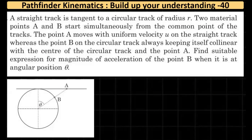Let's see this question of kinematics from Pathfinder — it's a 'Build Up Your Understanding' question number 14. The question states: a straight track is tangent to a circular track of radius r. Two material points A and B start simultaneously from the common point of the tracks. Point A moves with a uniform velocity u on the straight track, whereas point B on the circular track always keeps itself collinear with the center of the circular track and point A.